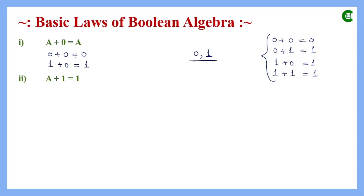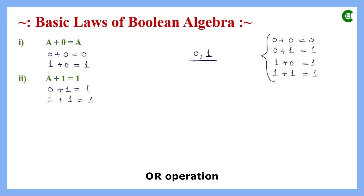The next basic law is a plus 1 equals 1. If the value of a is 0, then 0+1=1. If the value of a is 1, then 1+1=1. So whether a is 0 or 1, when a Boolean variable is added with the constant 1, the result is always 1, regardless of the variable's value.